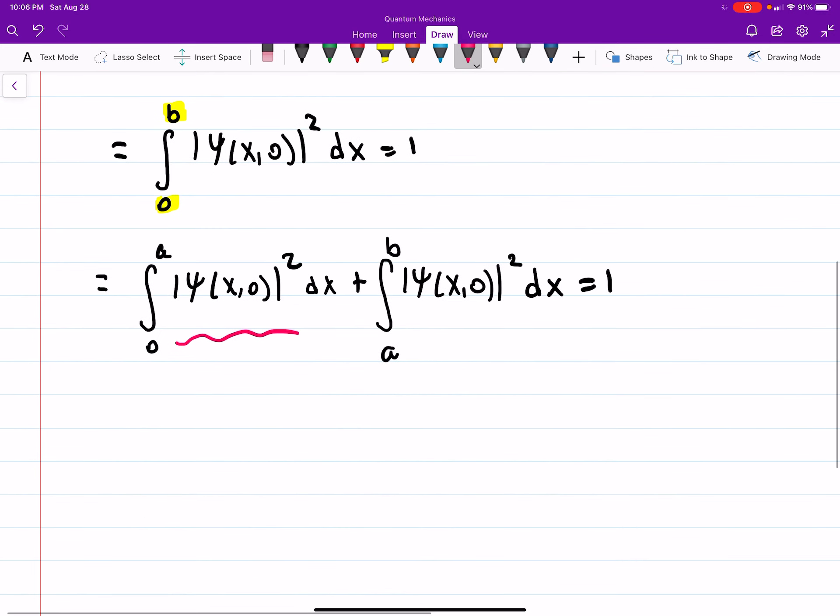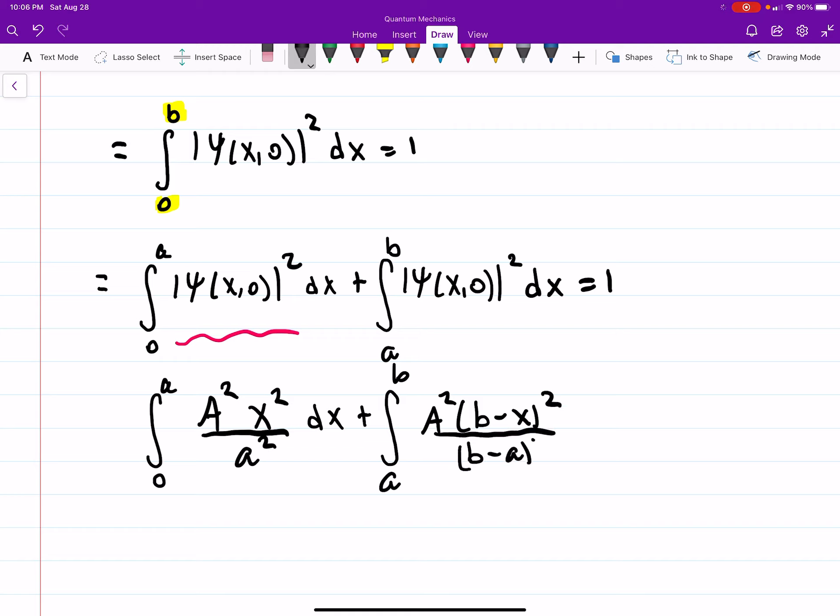So, we have the integral from 0 to A. We're going to have A squared, so we're squaring everything. x squared divided by little a squared, dx, plus the integral from A to B. A squared, (b minus x) squared, divided by (b minus a) squared, dx, must equal 1. Again, that's just the squared of the wave function, so that's basically given.